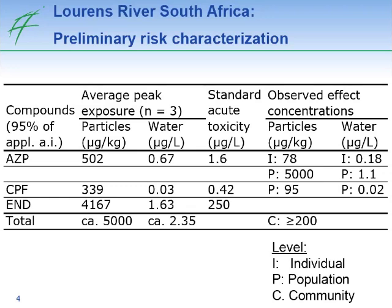Looking now at the situation in the Lourens River in South Africa, using the concentrations measured in the other talk, we can assess what potential risks we may assume. Here is a table listing different insecticides, the peak concentrations measured in particles and water, and on the right-hand side, the observed effects — either at the individual level, the population level, or the community level.